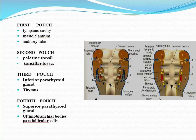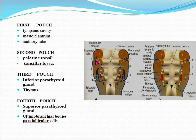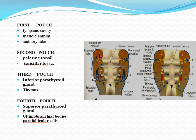In this video I'm going to talk about the derivatives of pharyngeal pouches. This is the primordial pharynx, and these are pharyngeal arches. The yellow lining on the inside of the primordial pharynx is the endoderm, and the blue membrane lining the pharyngeal arches on the outside is the ectoderm. In between these two layers we have the mesoderm.